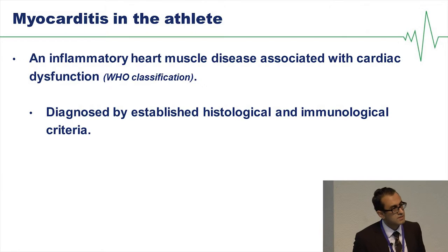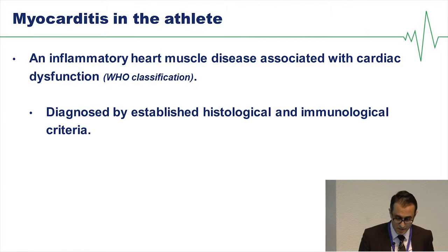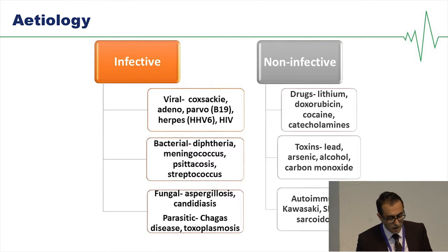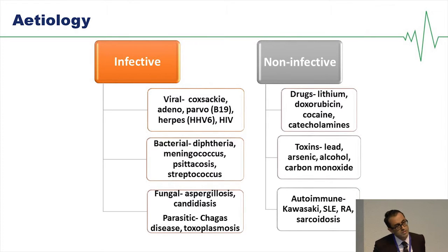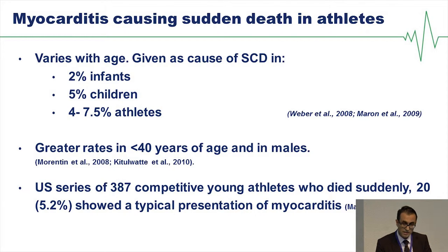Moving on to myocarditis — this is an inflammatory heart muscle condition diagnosed by histological and immunological criteria, characterized by myocyte degeneration and necrosis in the absence of ischemia. There are a variety of causes, both infective and non-infective. Myocarditis is a cause of sudden cardiac death in athletes, typically affecting those under 40, predominantly males. A case series of nearly 400 athletes showed that 5.2% died from myocarditis.